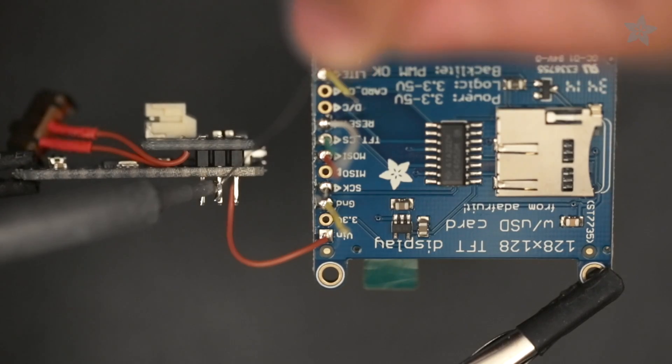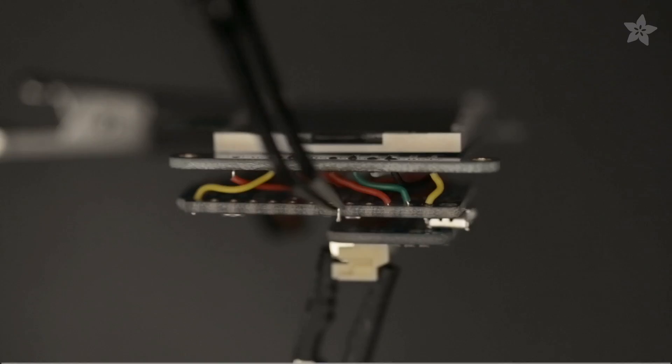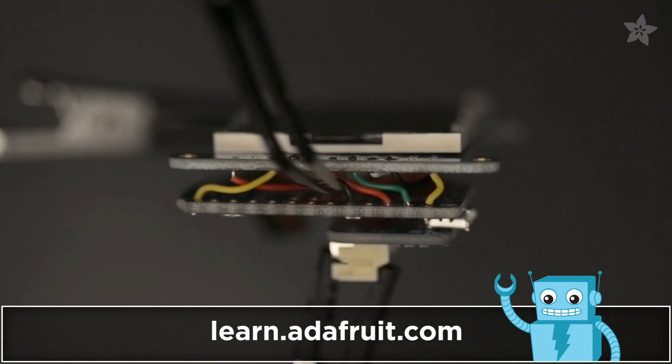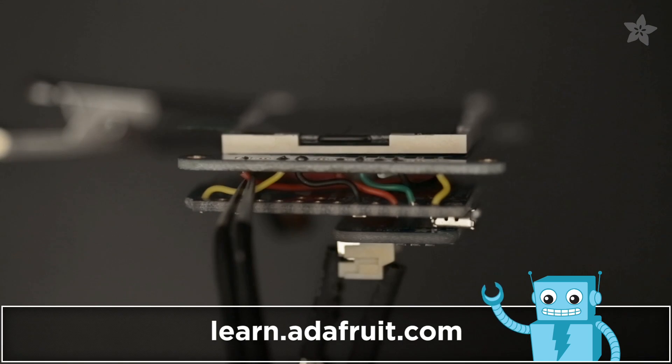Carefully solder the wires together with tiny bits of silicone coated strand wire. You can follow along by checking out the complete tutorial on the Adafruit learning system. The link is in the description below.